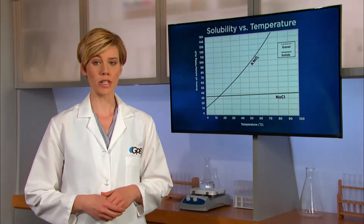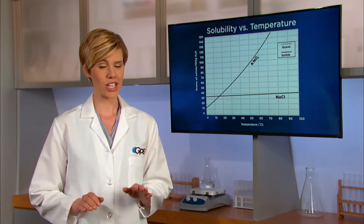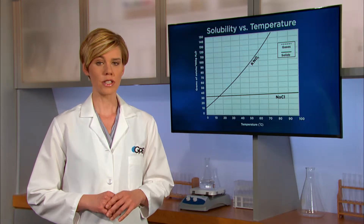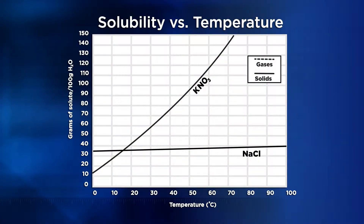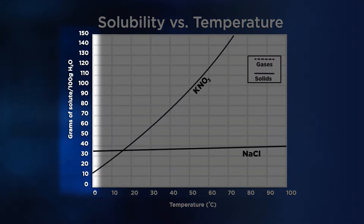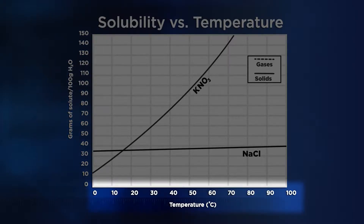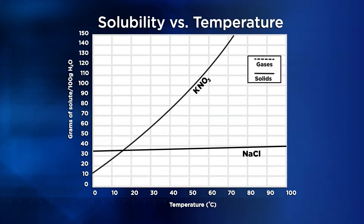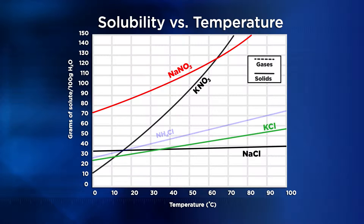A solubility curve shows the dependence of solubility on temperature. On this graph, the y-axis shows grams of solute per 100 grams of water, and the x-axis displays temperature in degrees Celsius. Other solids that dissolve in water include sodium nitrate (NaNO3), potassium chloride (KCl), ammonium chloride (NH4Cl), and potassium iodide (KI). For solids, represented as solid lines on the graph, as temperature increases, greater and greater amounts of solute can be dissolved in 100 grams of water.